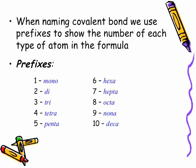Now, when naming covalent bonds, we use prefixes to show the number of each type of atom in the formula. So here are the prefixes: 1 for mono, 2 for di, 3 for tri, tetra for 4, penta for 5, hexa for 6, hepta for 7, octa for 8, nona for 9, and deca for 10.